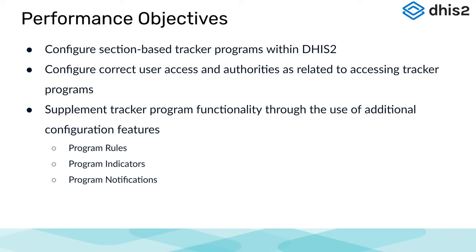When we look at what we want you to be able to do by the end of the Academy: be able to configure tracker programs within DHIS2, configure the correct user access and authorities related to accessing tracker programs, and also supplement these tracker programs with additional configuration features. Program rules, program indicators, and program notifications are the big ones that come to mind. This is meant to be a continuous learning — you might not learn everything for your specific use case, but we're hoping to give you broad principles you can build upon and apply in your own use cases.